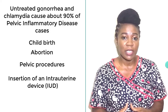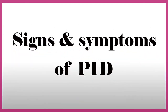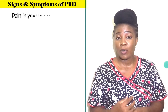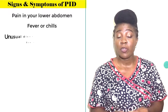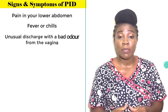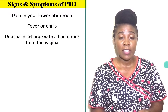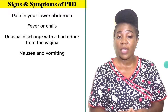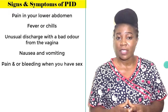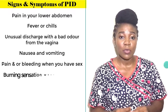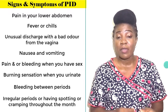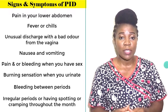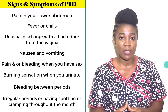Signs and symptoms of pelvic inflammatory disease include: pain in your lower abdomen, fever or chills, an unusual discharge with a bad odor from your vagina, nausea and vomiting, pain and/or bleeding when you have sex, a burning sensation when you urinate, bleeding between periods, and irregular periods or having spotting or cramping throughout the month.